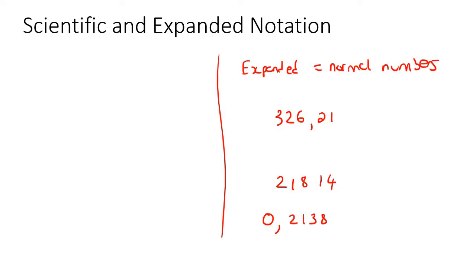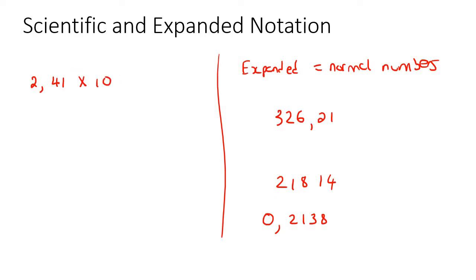Scientific notation — those numbers look weird. They have things like 2,41 times 10. As soon as you see this 'times 10' part, then you know that that's scientific. And then they put a little number at the top, like a 3 for example.